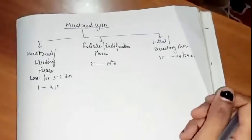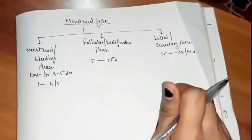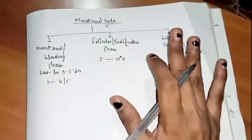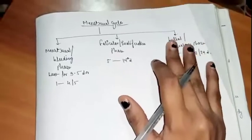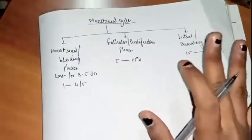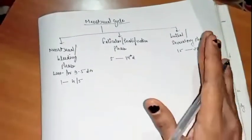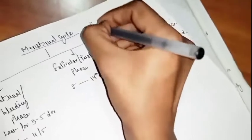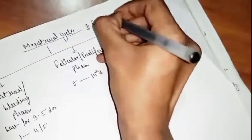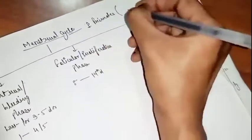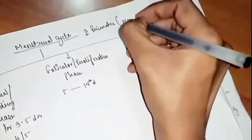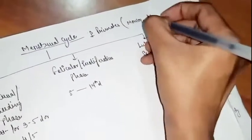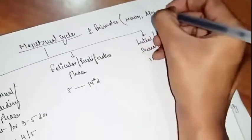Hello guys, today I am going to explain the menstrual cycle, which is the most important topic of NEET. So what is the menstrual cycle? It is the reproductive cycle of female primates. Female primates include monkeys, apes, and humans.